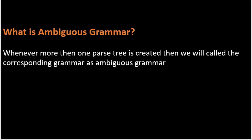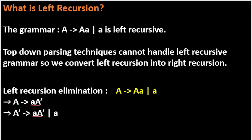The next question is: what is ambiguous grammar? If we have a grammar through which we can draw more than one parse tree, then that grammar is known as ambiguous grammar. If we are able to draw one and only one parse tree, then that grammar is known as unambiguous grammar.